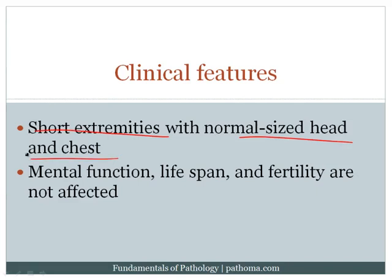This is very high yield and goes back to embryology. There are two ways by which bone can be formed. The first is intramembranous, where bone is produced directly from a connective tissue matrix. This is how the bones of the skull, chest, and flat bones are made. In achondroplasia, there is no problem with intramembranous bone formation, so patients have a normal-sized head and chest.